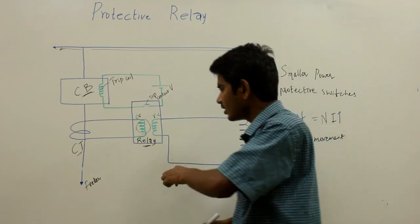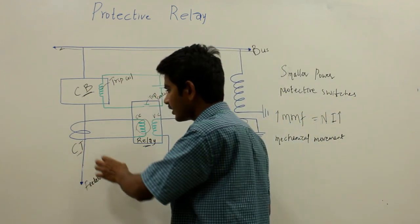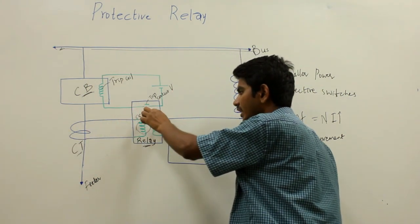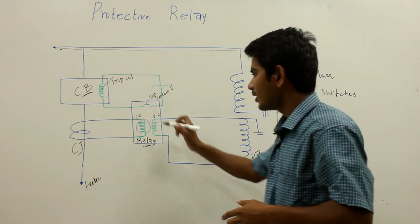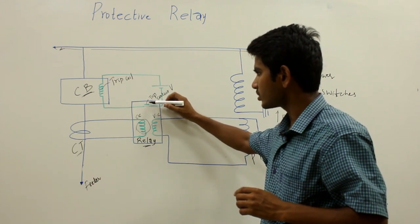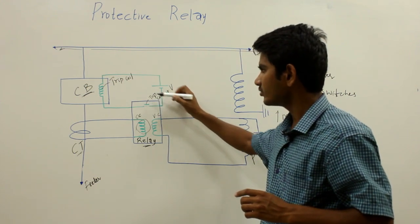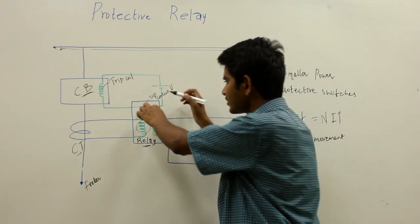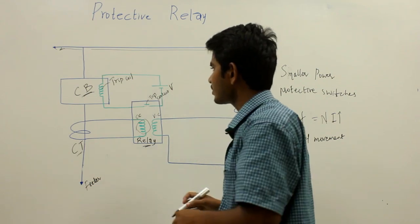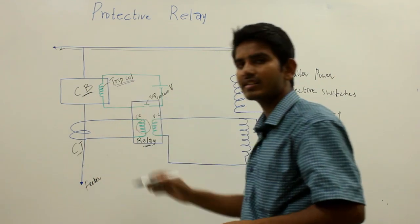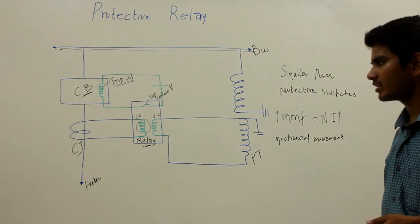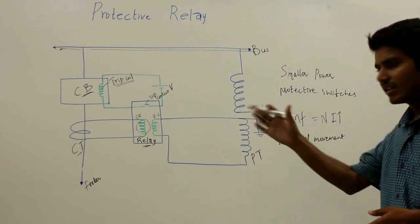To summarize: whenever there is a fault in the feeder circuit, the proportionate secondary current of the current transformer flows through the current coil of the relay. The high current causes the MMF of the current coil to increase, which is sufficient to close the open trip contact of the DC trip coil circuit. Once this contact closes, the trip coil is energized by the DC voltage, initiating the mechanical movement of the tripping mechanism, and ultimately the faulty portion is isolated via the circuit breakers.